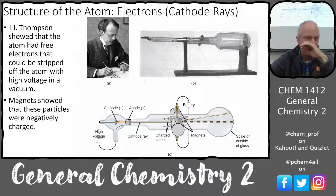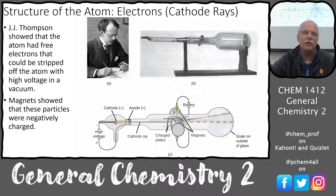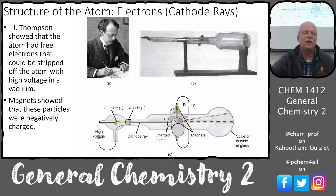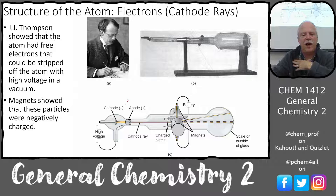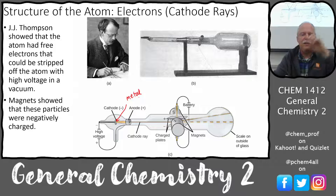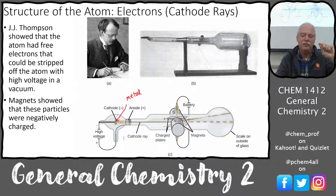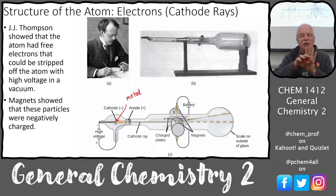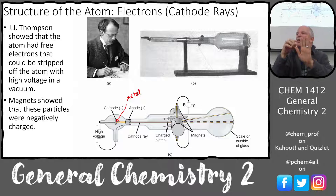Let's review atomic structure. J.J. Thomson showed that atoms had free electrons that could be stripped off in a vacuum under high voltage. This metal piece, when put in a vacuum glass container and charged negatively, causes electrons to repel and stream off the surface — attracted toward a positive anode. Some pass right by the anode and hit a phosphor screen.